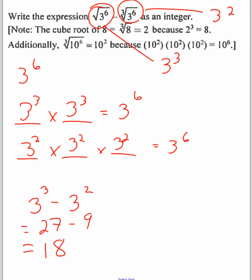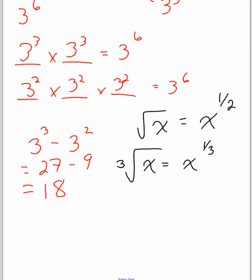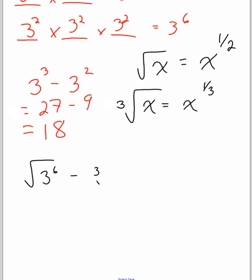Just as an aside for anyone interested, another way of writing square root of some number is that number to the exponent of a half. Another way of writing cube root of some number is that number to the exponent a third. So square root of 3 to the 6 minus cube root of 3 to the 6 can be rewritten as 3^6 to the power of 1/2 minus 3^6 to the power of 1/3. Then you can apply the power to a power rule. That becomes 3 to the 3 and that becomes 3 to the 2, and you get the same answer. That's a little bit of grade 11 math for you, a little bit of an extension.